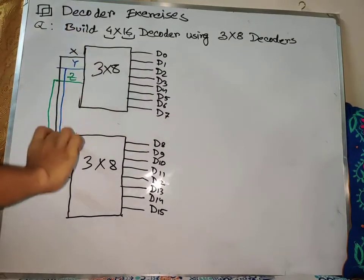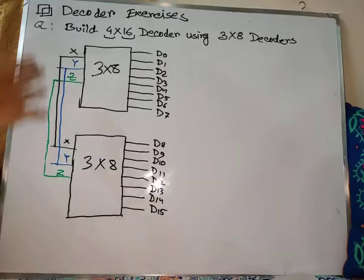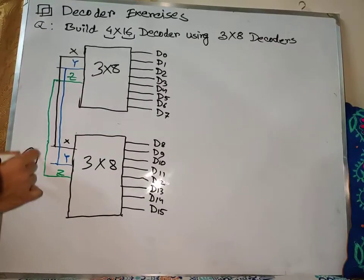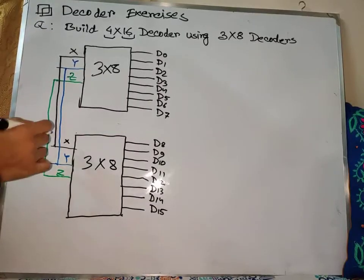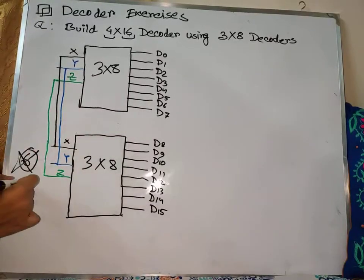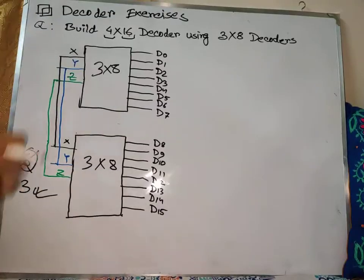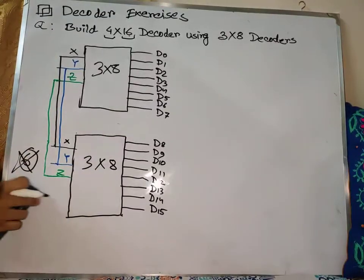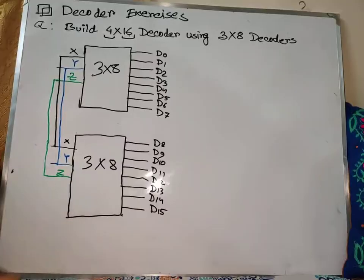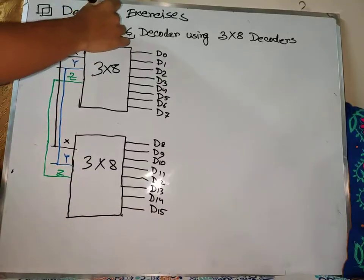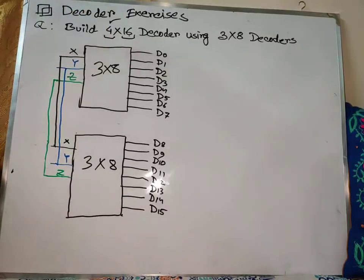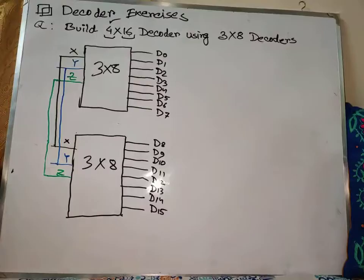This is 3 inputs. If you have the input short, there will be 3 inputs. If you have the input short over here, there will be 3 inputs.